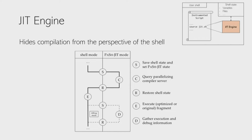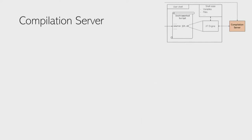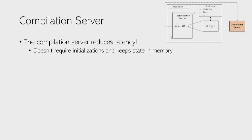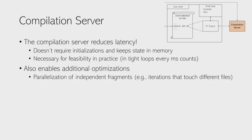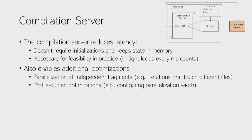Now the compilation server. Originally PaSh was a compiler you invoked to produce a parallel script, but we changed it to a long-living stateful compilation server. This reduces latency by not requiring initialization and keeping all state in memory — necessary for feasibility in tight loops where milliseconds count for small scripts. The compilation server enables additional optimizations: parallelizing independent fragments like loop iterations touching different files, and profile-guided optimizations like monitoring execution time to configure parallelization width in later executions.